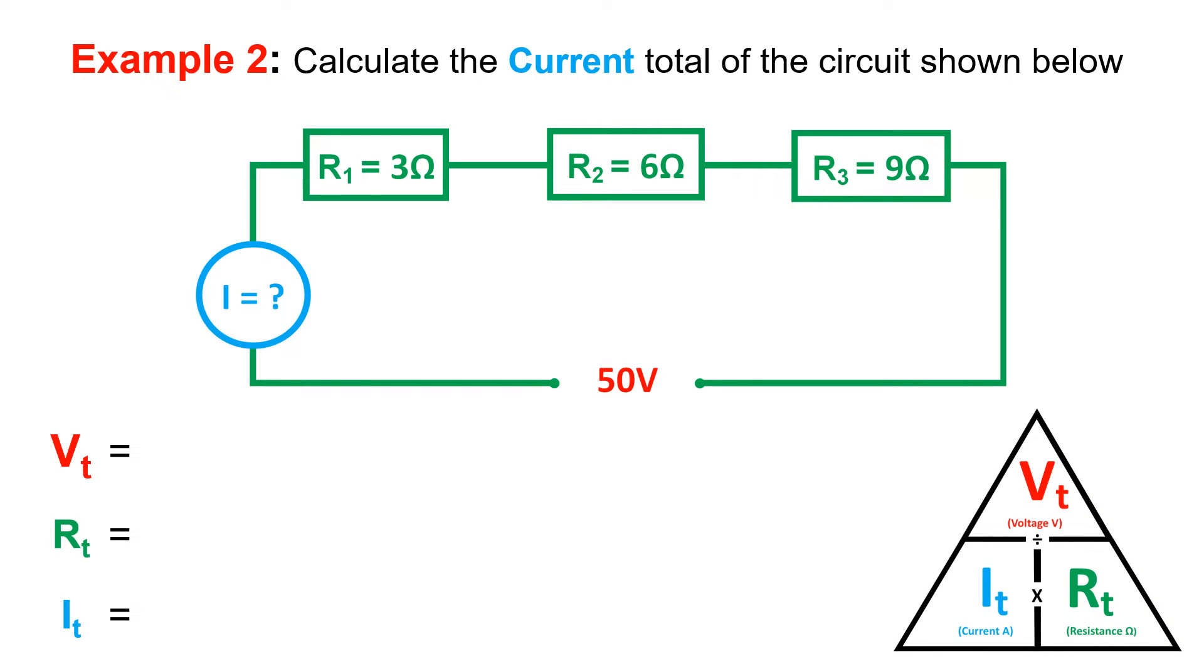In this example, we have a voltage total of 50 volts. We can now see that we need either the RT or the IT. Since we only have the individual resistance values, we are going to have to calculate our resistance total to find our current total.